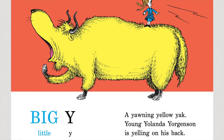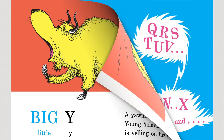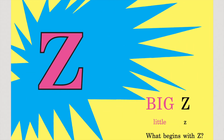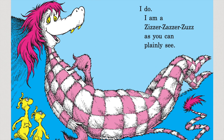Big Y, little Y — a yawning yellow yak. Young Yolanda Jorgensen is yelling on his back. A, B, C, D, E, F, G, H, I, J, K, L, and N, O, P. Q, R, S, T, U, V, W, X, Y, and Z. Big Z, little Z — what begins with Z? I do. I am a Zizzer Zazzer Zeus, as you can plainly see.